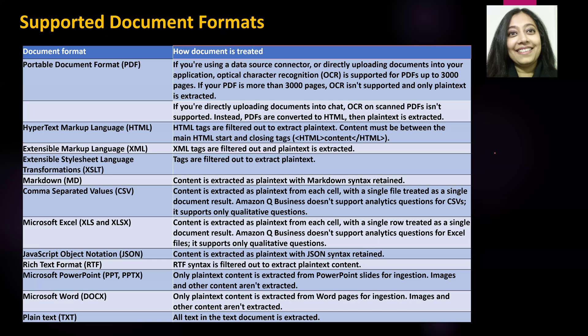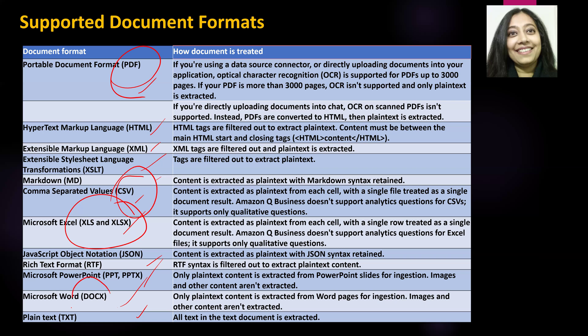The document formats supported by Amazon Q Business include PDF, HTML, XML, CSV, XLS, Rich Text Format, PPT, DOCX, and TXT. There is also XSLT and Markdown support. Most organizations will have a lot of PDFs, Excel files, CSVs, Word documents, text documents, and PowerPoints — and as you can see, most of these common document types are supported.